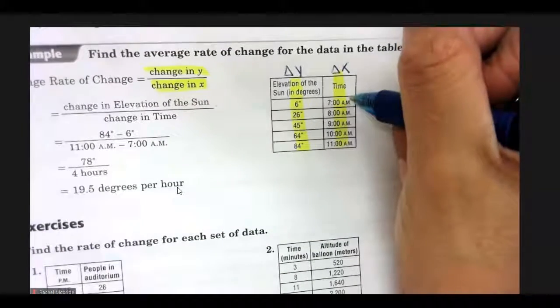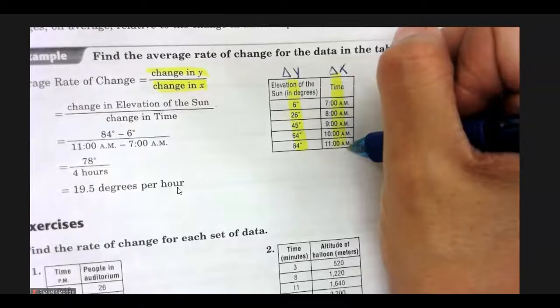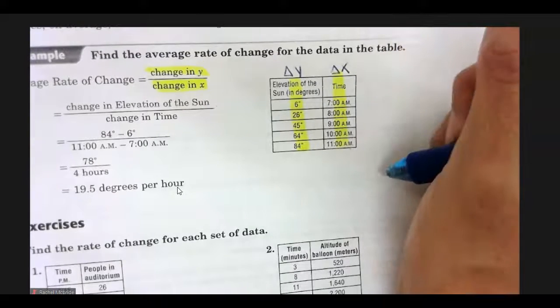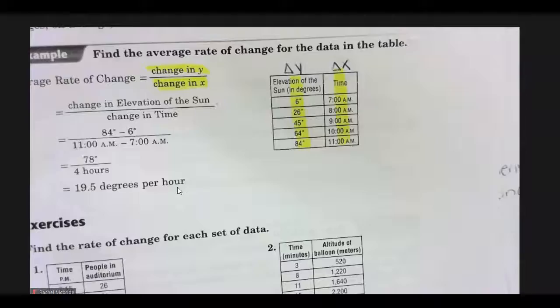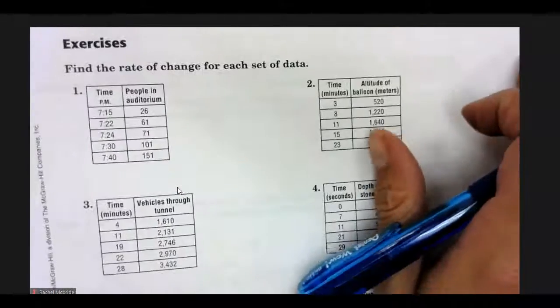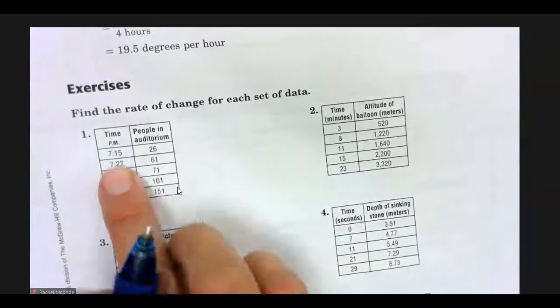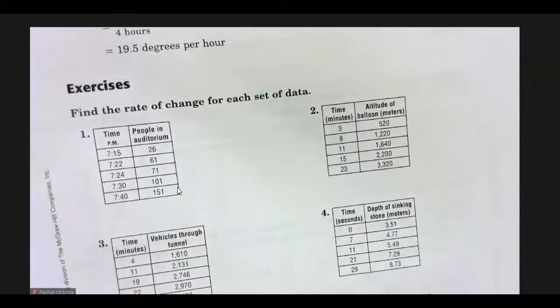And then, if your time is in a.m. or p.m., you have to make sure you change it to 24-hour time periods. So, for example, in number 1, since it's all in the 7 p.m. zone, it won't be a big deal.